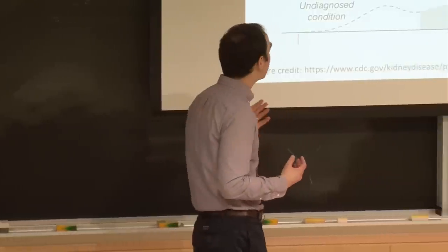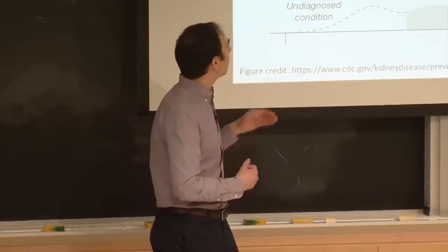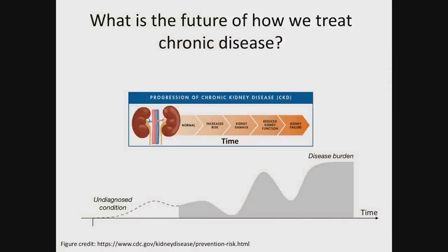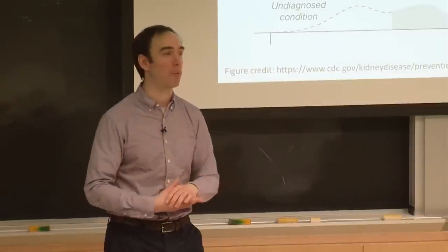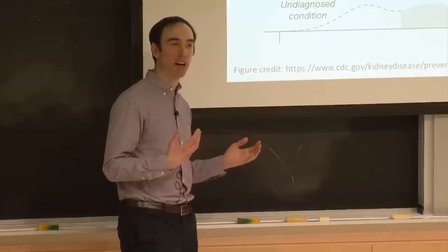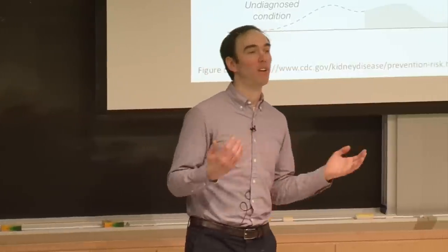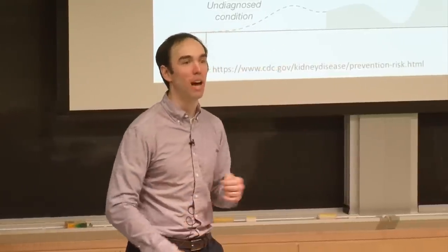Other conditions, like some cancers, don't follow that linear trajectory. Disease burden might get worse, better, worse again — a function of treatment and other factors. Understanding what influences how a patient's disease will progress, and when that progression will happen, could be enormously valuable for many parts of the healthcare ecosystem.